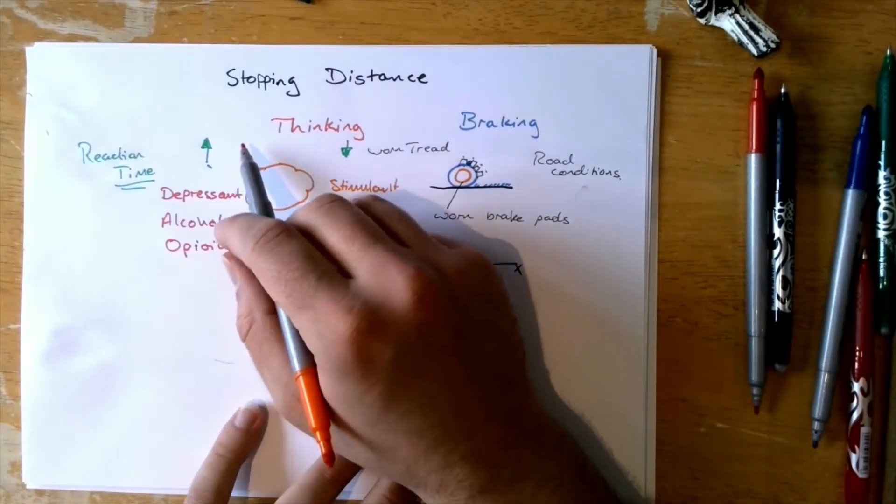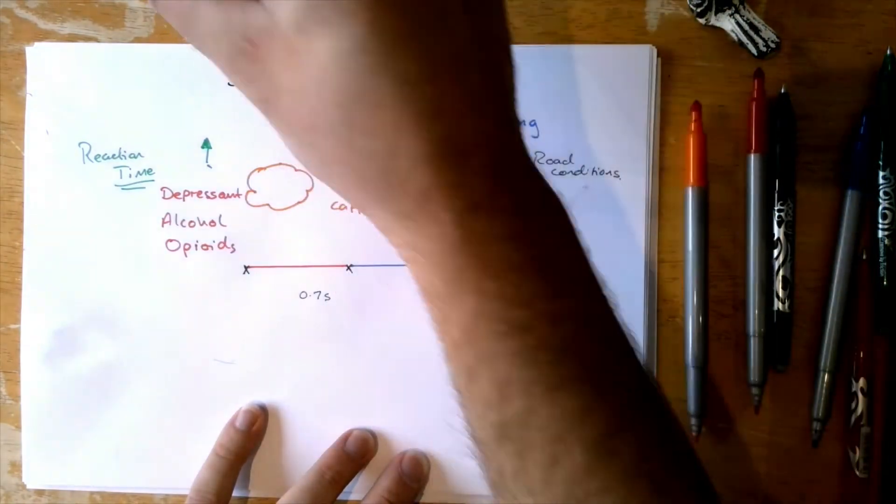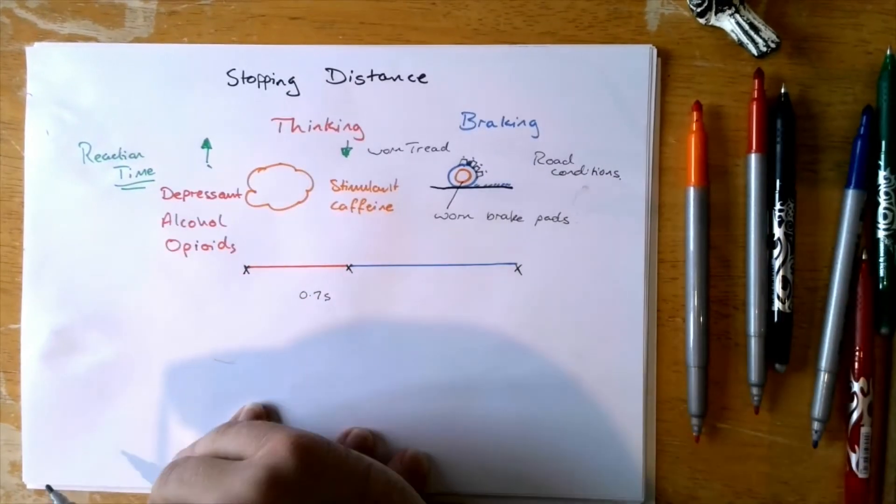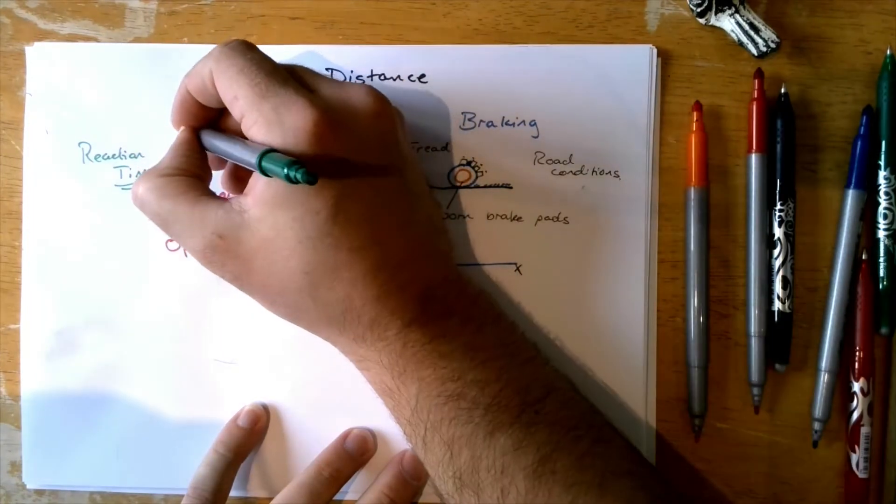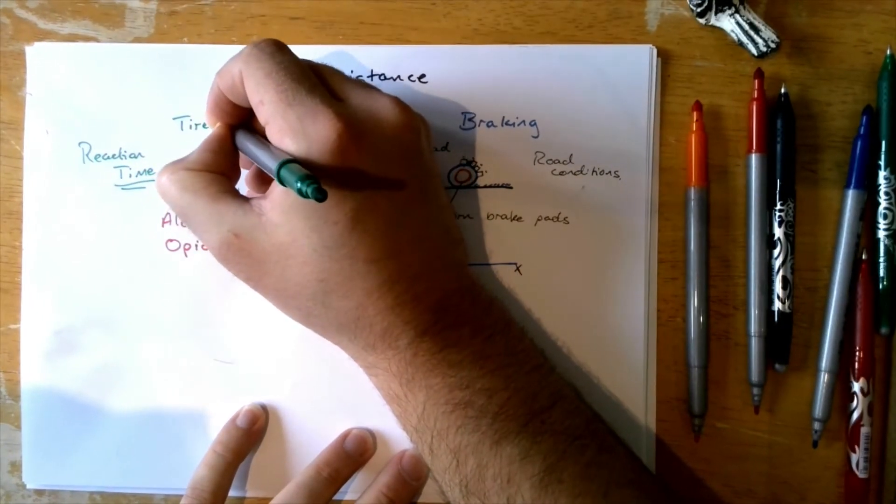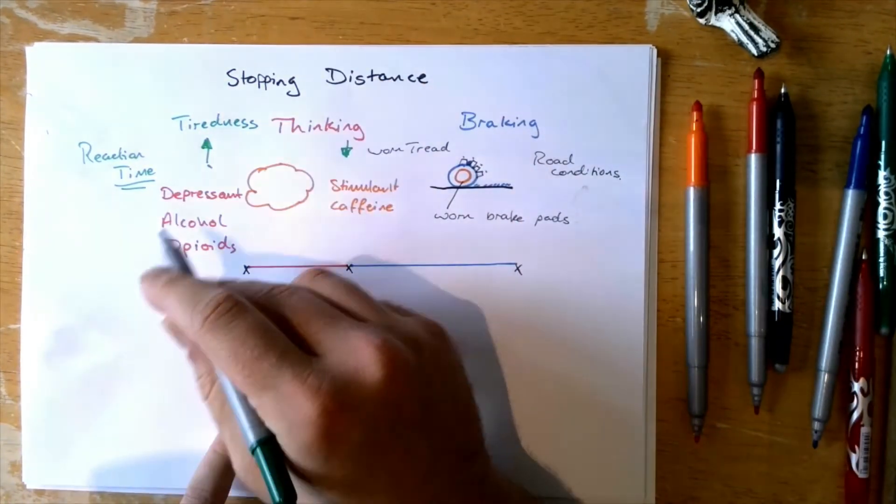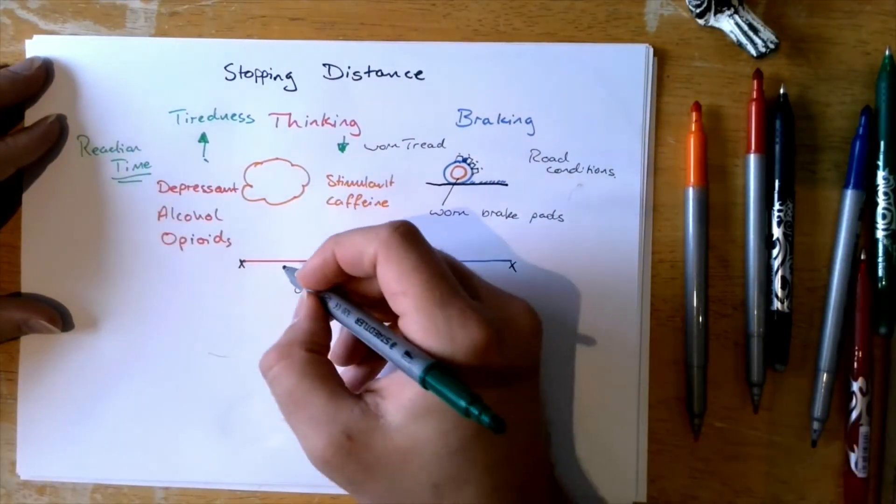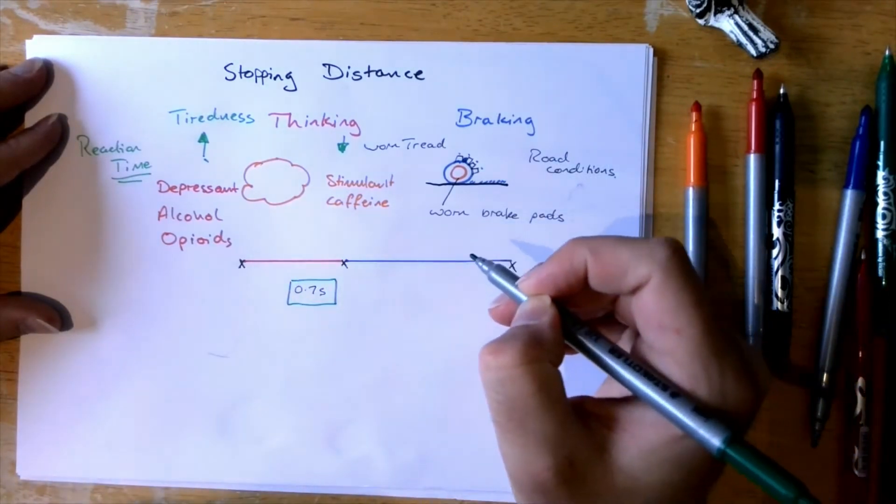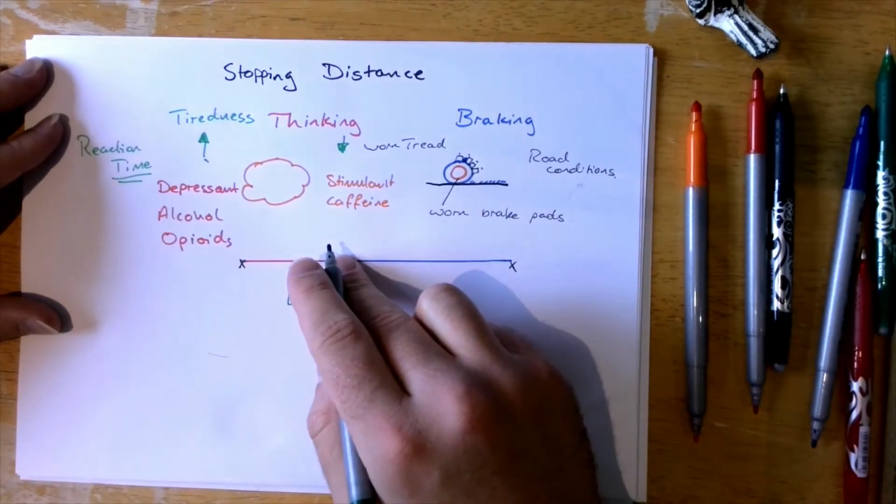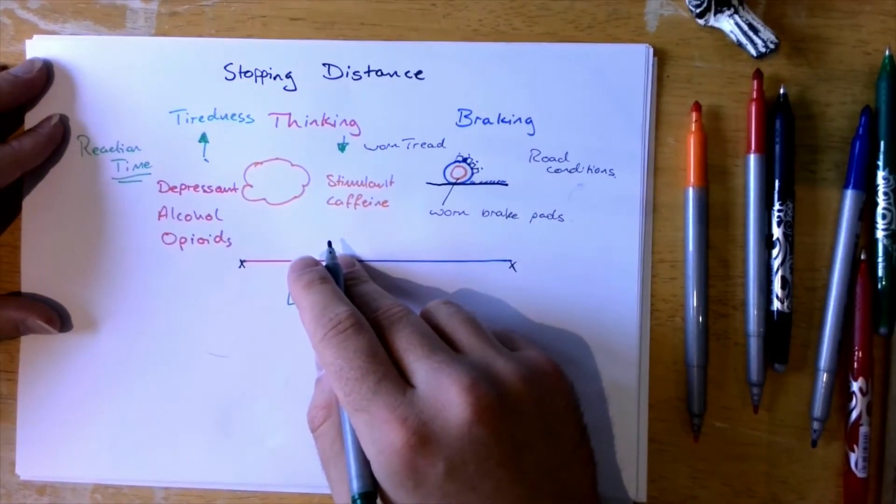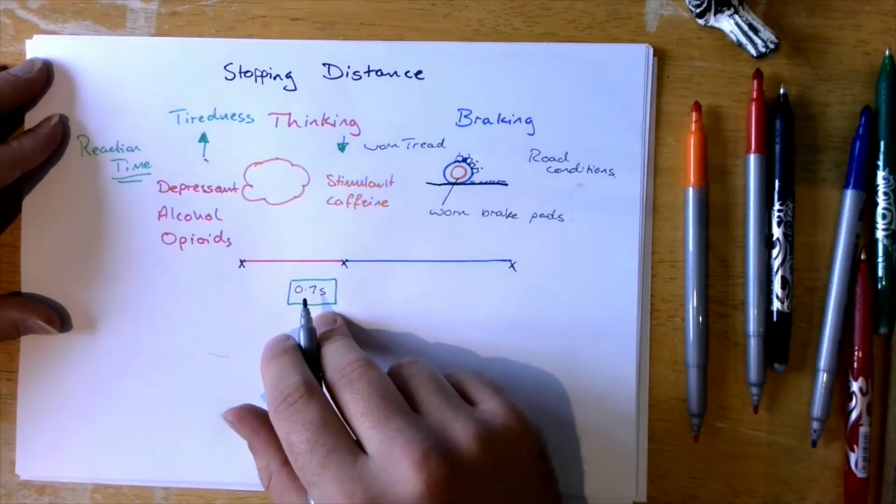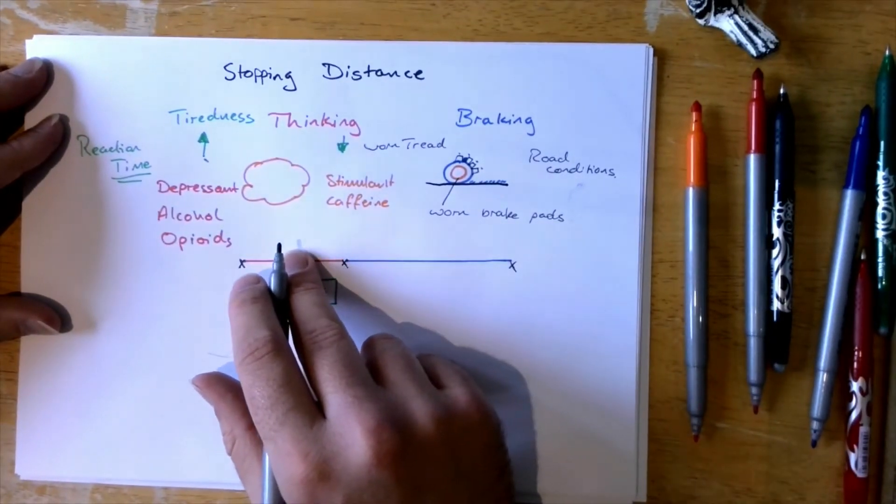Something that will also increase your reaction time which is super dangerous but not talked about a lot is tiredness or fatigue. If you're tired it takes you longer to react. So anything that increases this number the reaction time will increase the thinking distance. Anything that decreases this number will decrease the thinking distance.